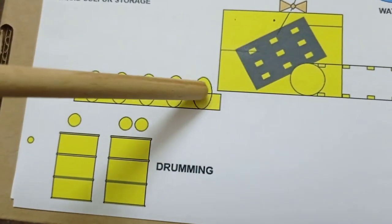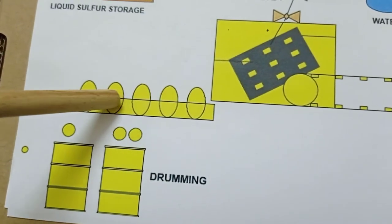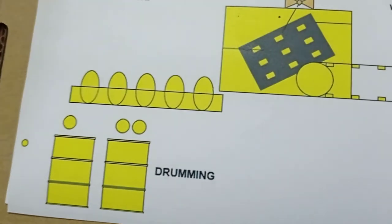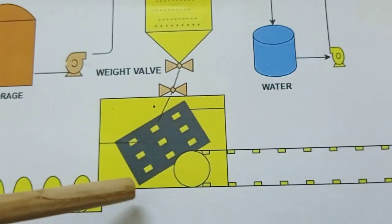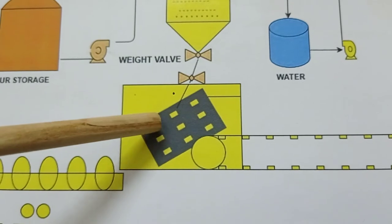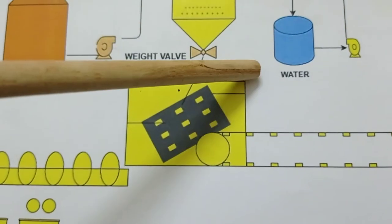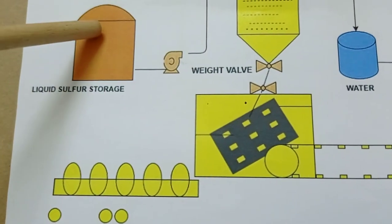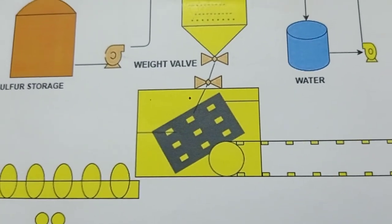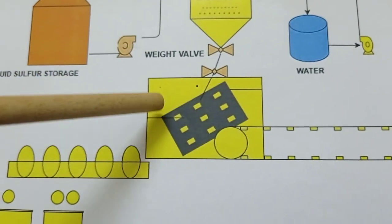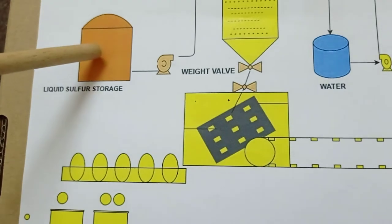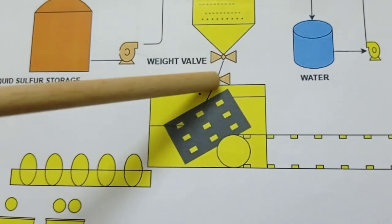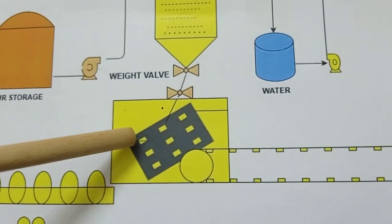Sulfur collected from the vibratory screen is loaded into drums via conveyor, the drums are sealed and sent to storage. Water collected from the screen is filtered and sent back for reuse. Sulfur that is not the desired size is sent back to the liquid sulfur storage tank to be melted and re-granulated — nothing is wasted. However, good housekeeping is important in this area because significant dust is produced, and dust can choke pump lines or strainers.